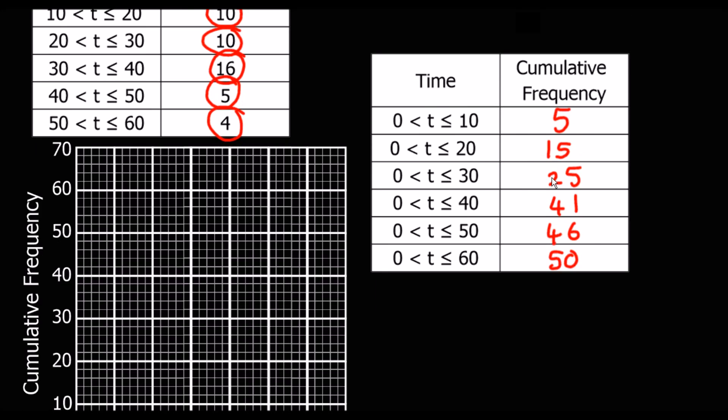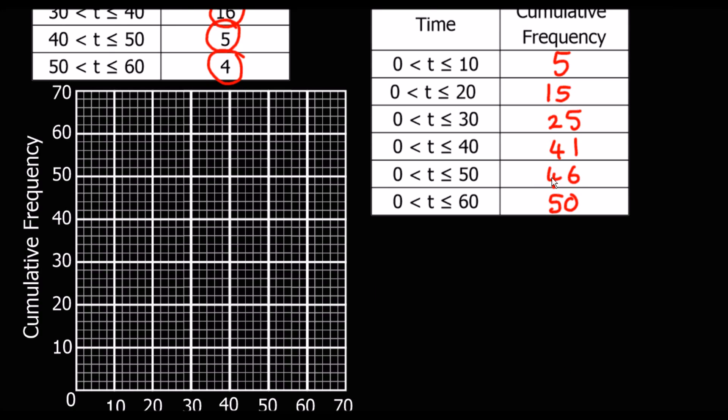So when we're asked to plot the cumulative frequency graph, this is up to 10. This 5 is up to 10. So we're plotting this top number. We don't plot the midpoint because there haven't been 5 by the time we get halfway. There's only been 5 by the time we get to 10. So we're plotting top point for cumulative frequency. So these are the points we want to plot.